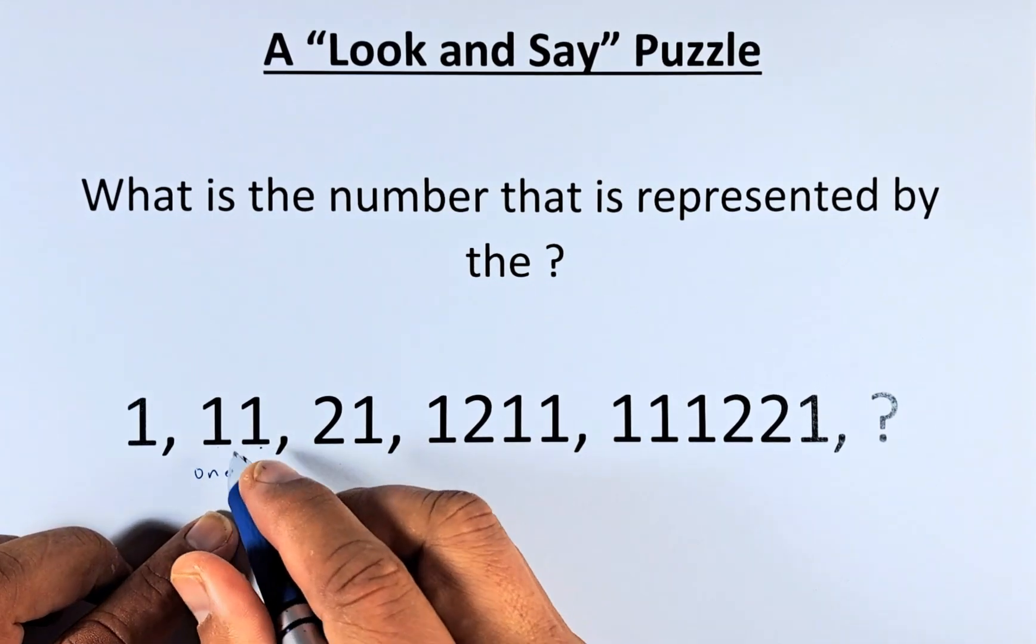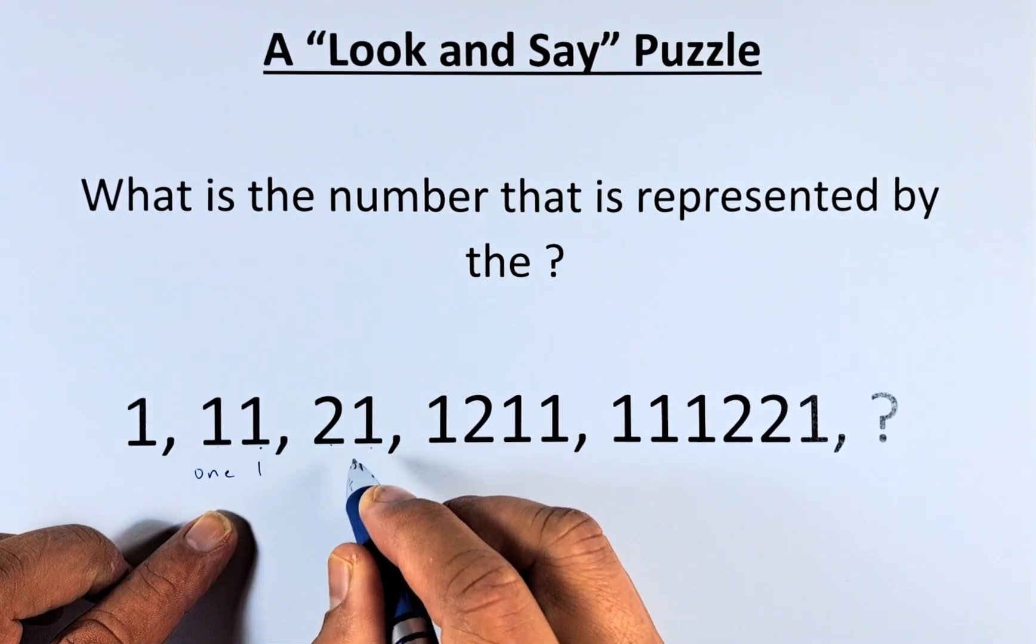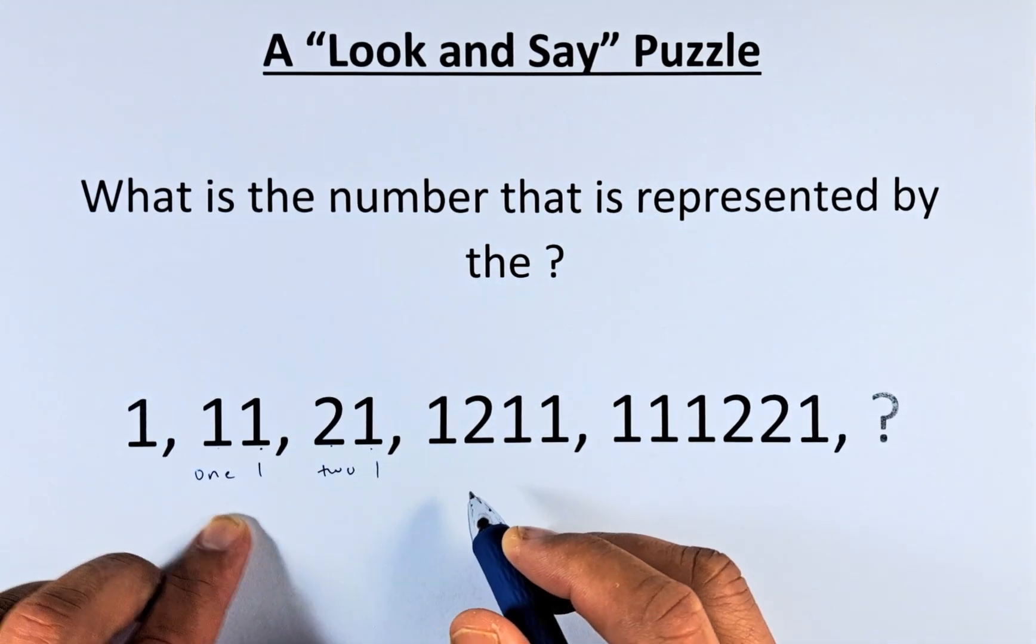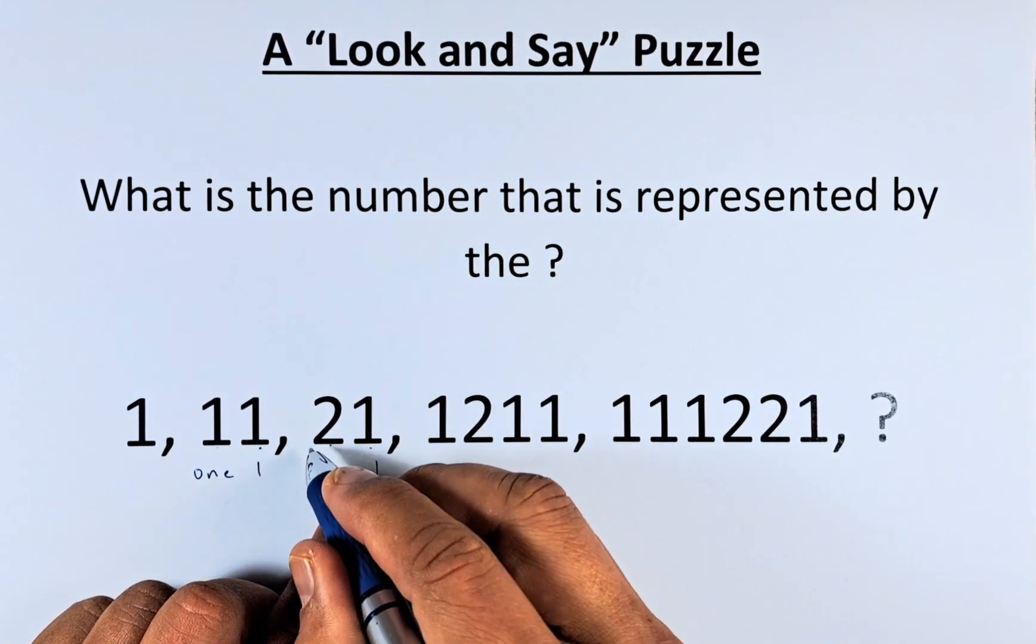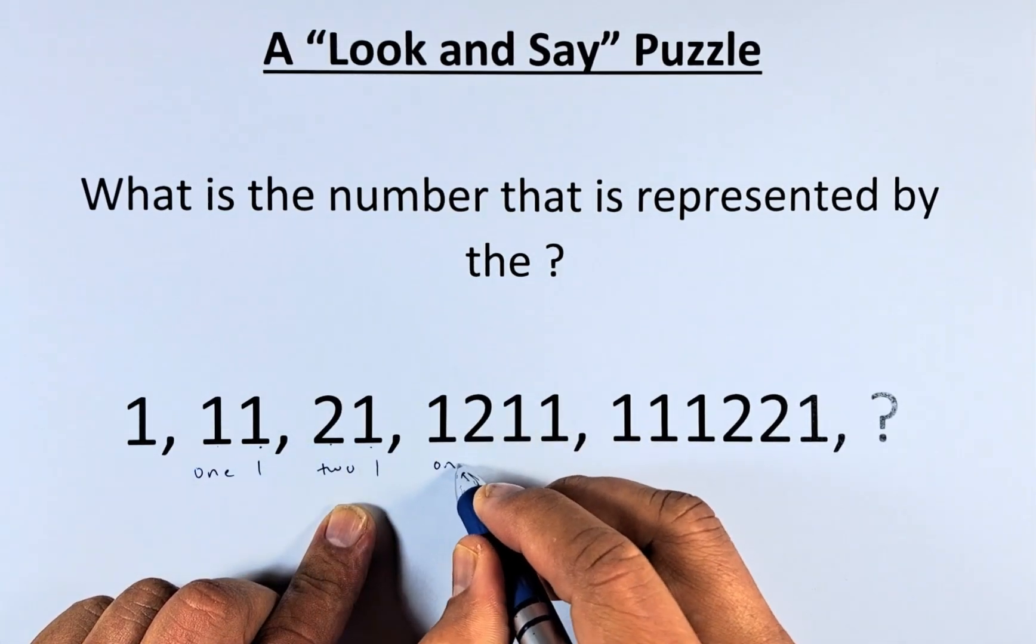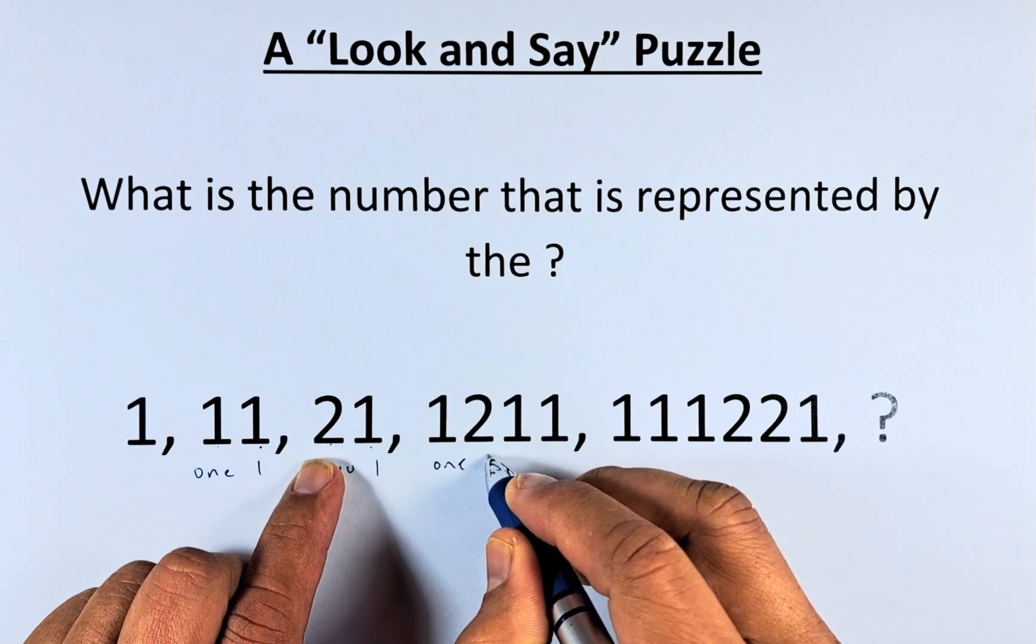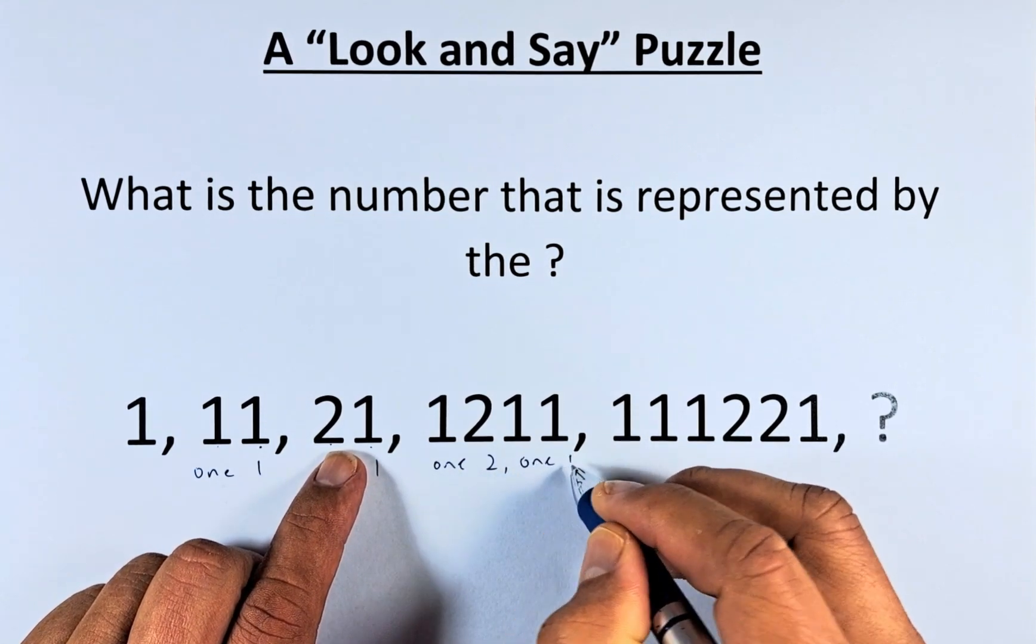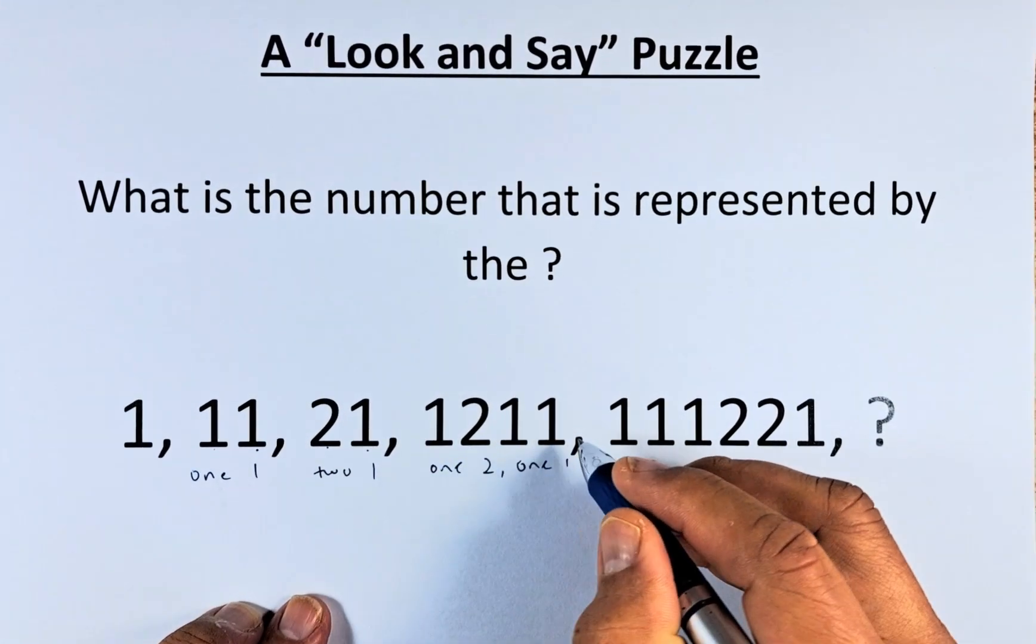In the next number, there are two 1s, so that is how you put 21. And from here, you got 21. There is only one 2 and one 1. That's why you get 1211.